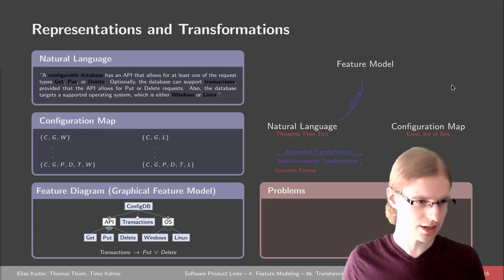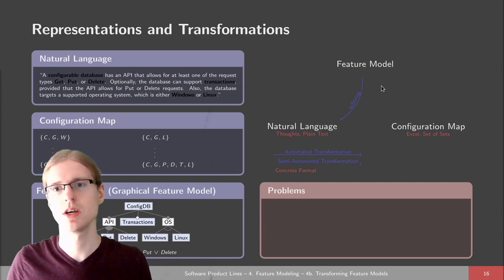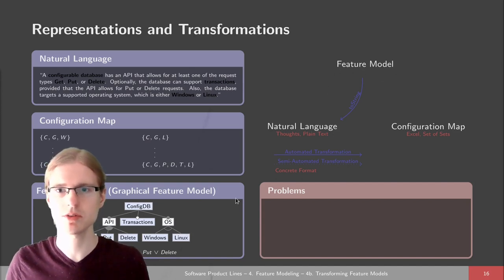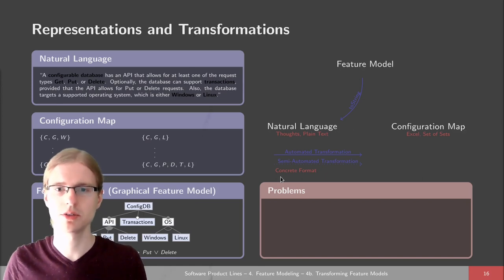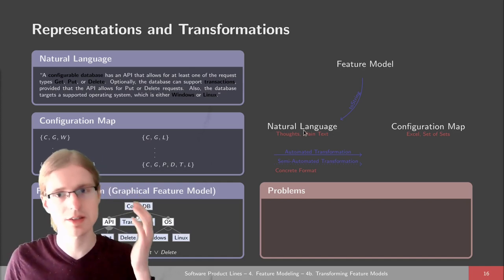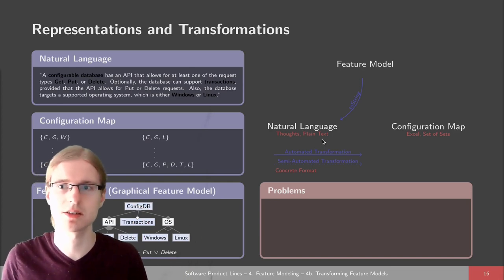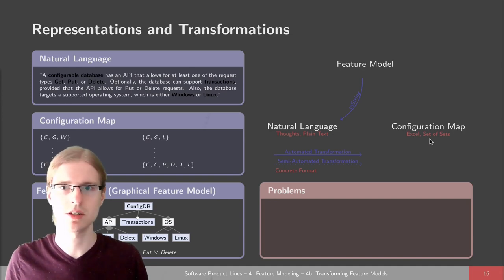On the right side you can see different representations of these feature models, for example in the form of a graphical feature model, natural language, or configuration maps. Features and dependencies can be contained just in our heads or written down as plain text. For configuration matrices, we've seen tables and set notation.